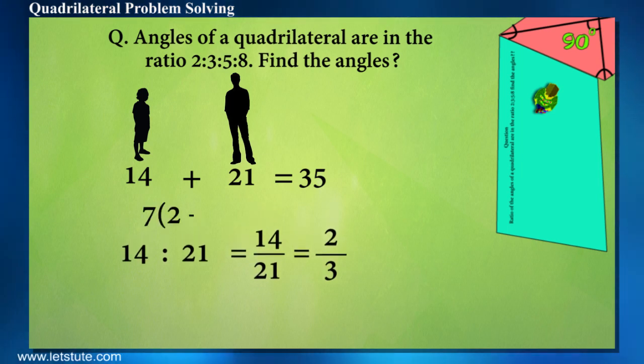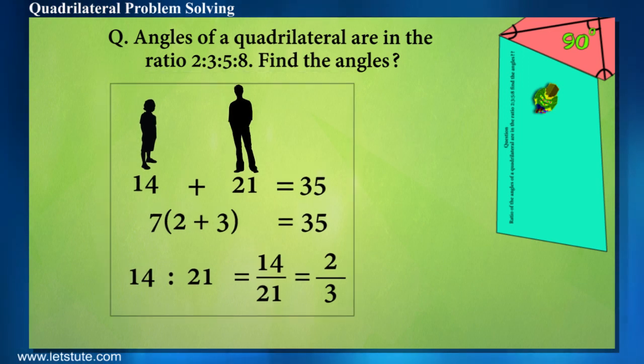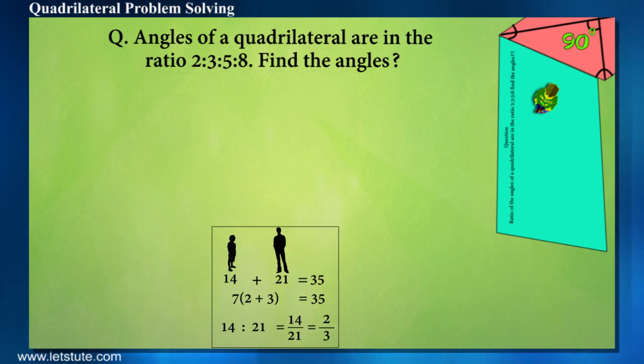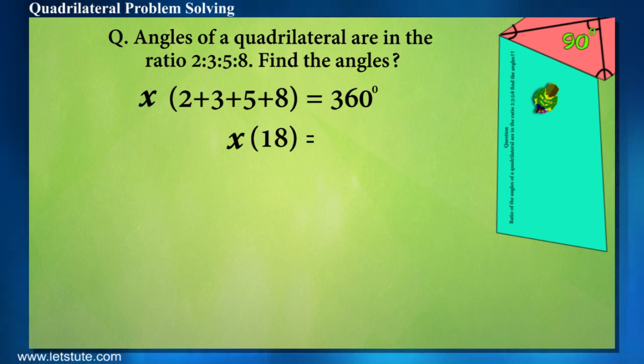Can I write it like this? By taking 7 as common factor. In the similar way, for the above question, we don't know the common factor so that the addition must be 360 degrees. This can also be written as, and therefore x comes out to be 20.